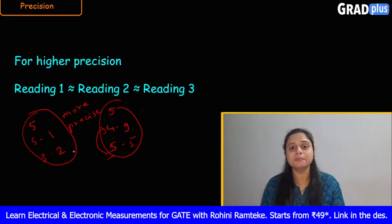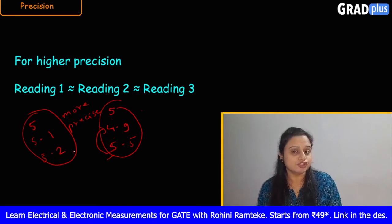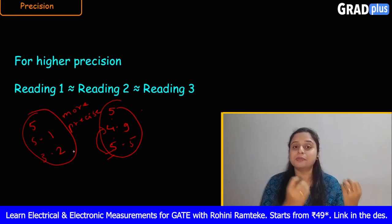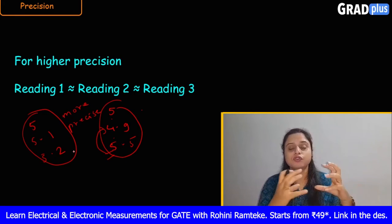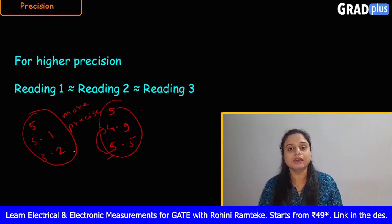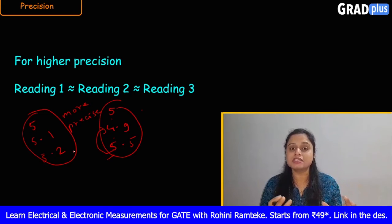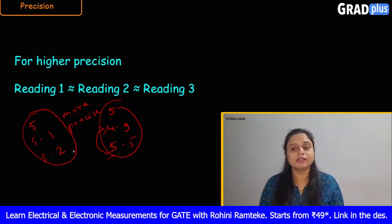So accuracy and precision are different terms. For better accuracy, the measured value must be nearly equal to the true value. For a more precise meter, the readings must be nearly equal to one another. These are the key differences between accuracy and precision.